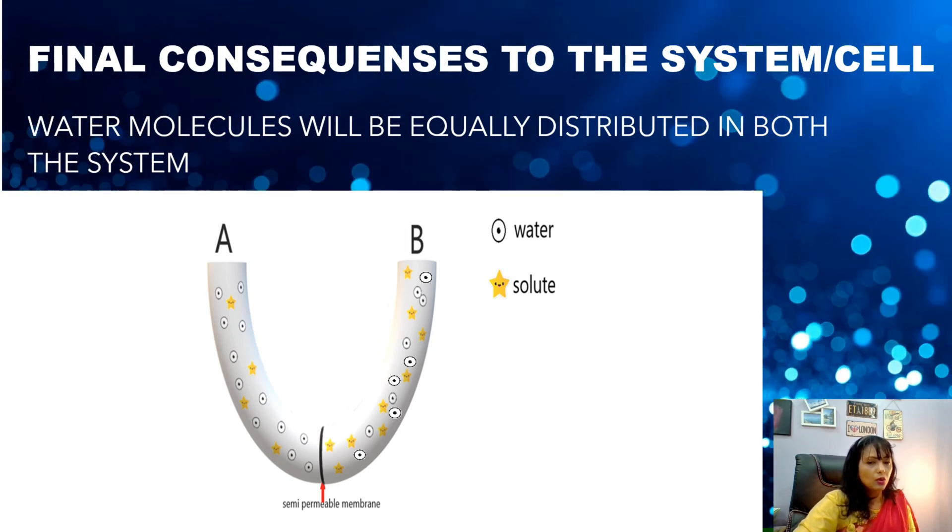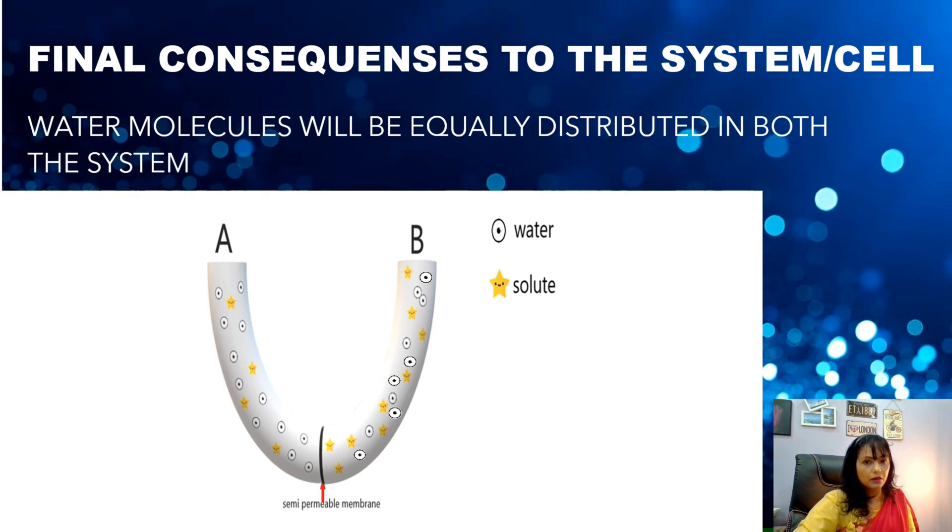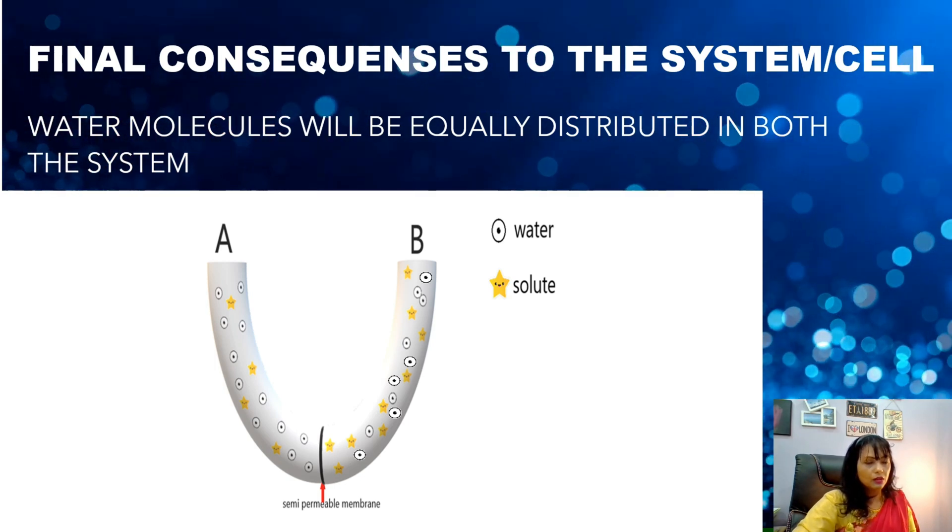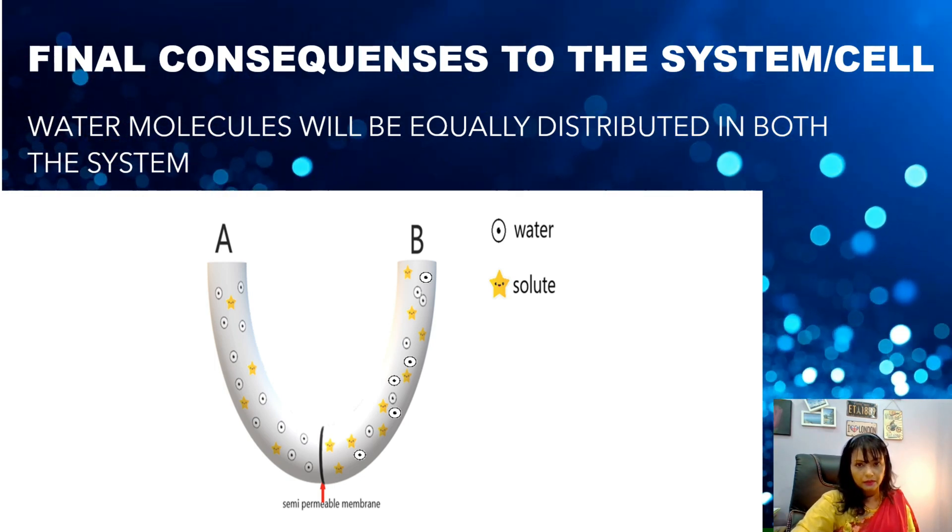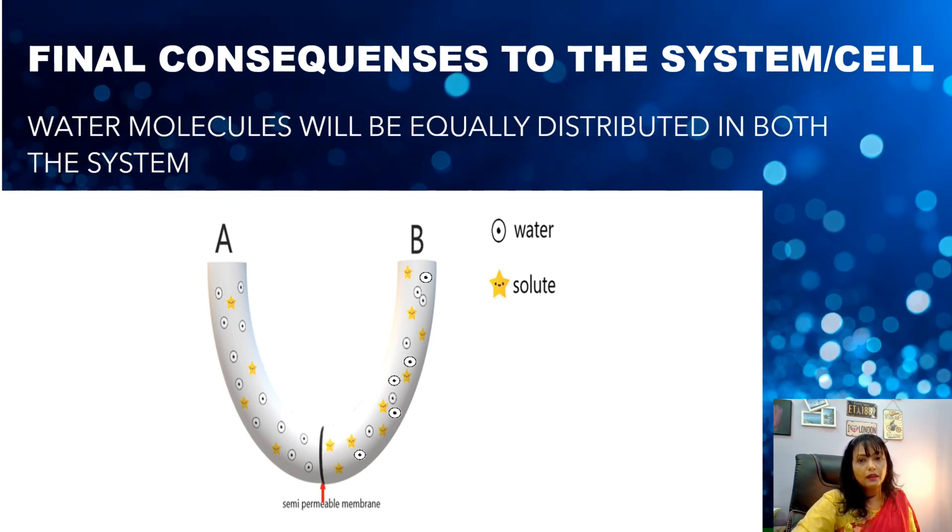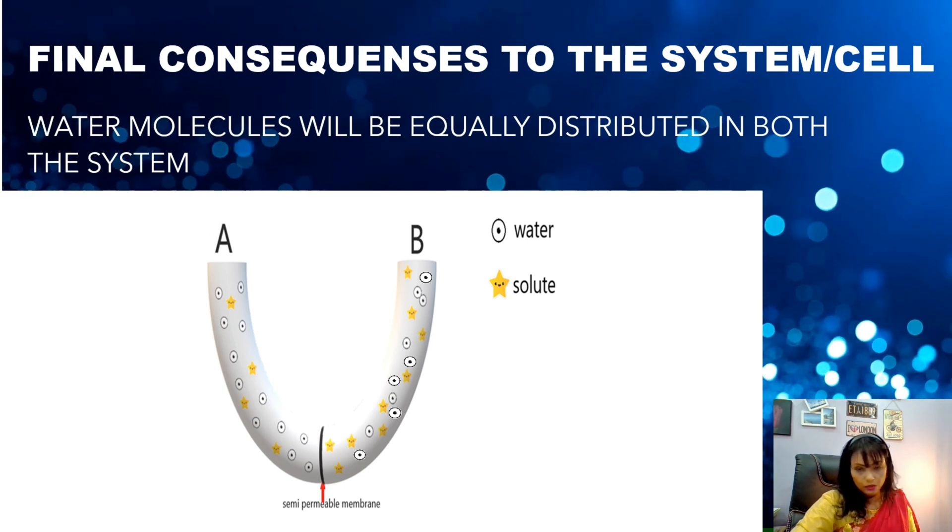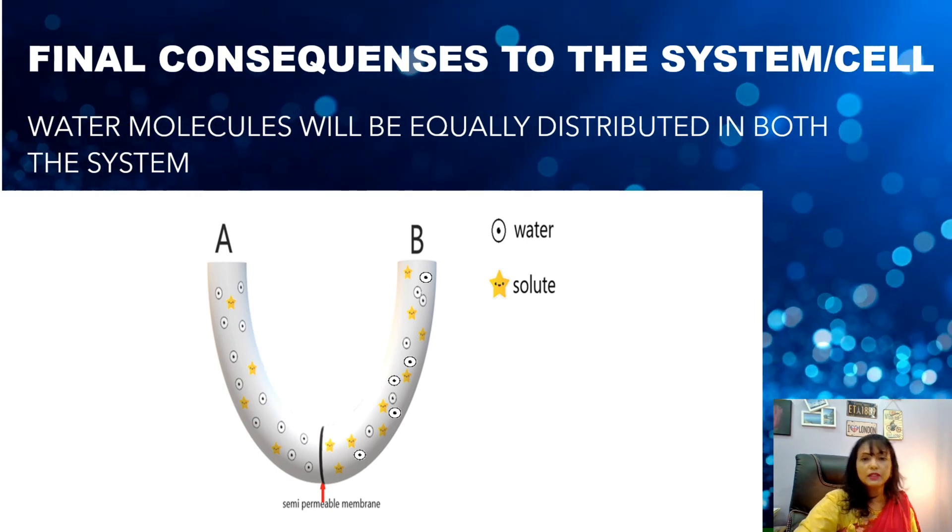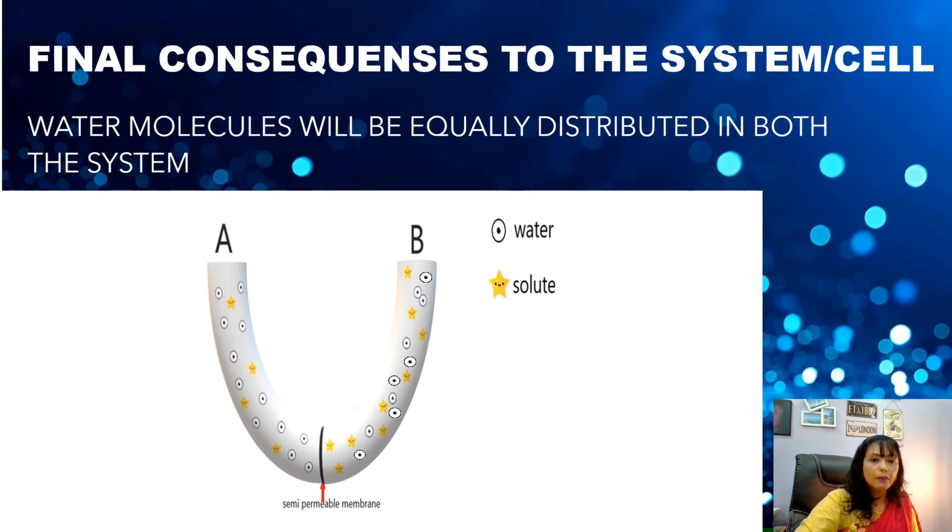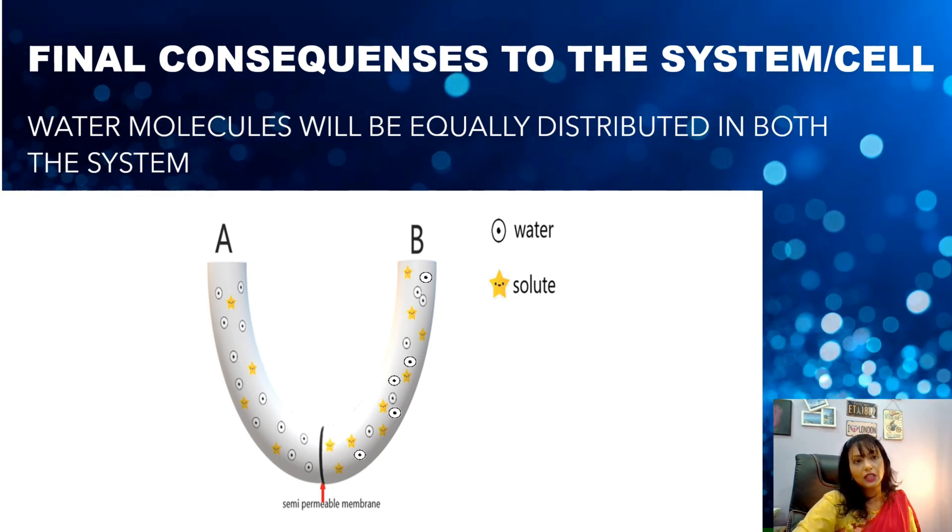But then please remember, please know that I did not talk anything about the solute. That means the solute will stay put in the system. They won't move anywhere if the water will be diffusing here and there. Right? So, the solute will not move anywhere. The water is the one that moves from A to B until they reach equilibrium.